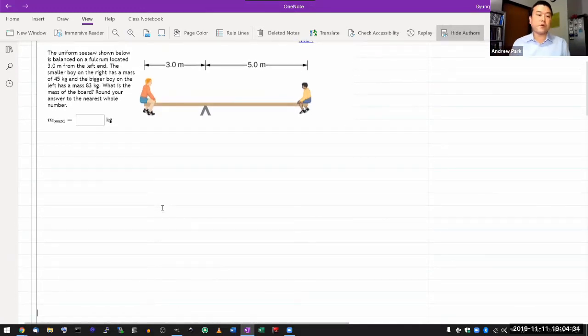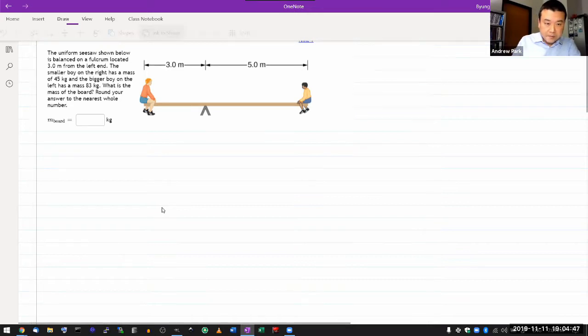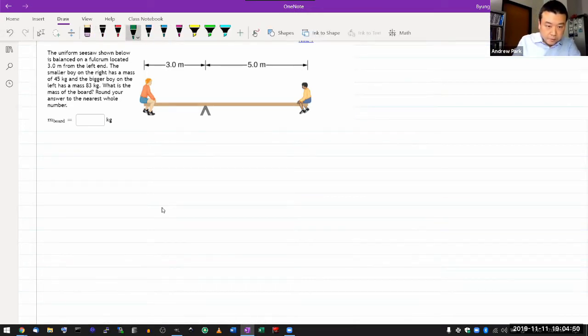It has a diagram, uniform seesaw shown below. It's balanced on a fulcrum located at three meters from left hand and you have two boys with the two different masses. Let me give them a label so that I have something to call them by. M1 and M2. This is the bigger boy, so that's M1. This is the smaller boy, which is M2. What is the mass of the board? Okay, so this is a standard static equilibrium question.